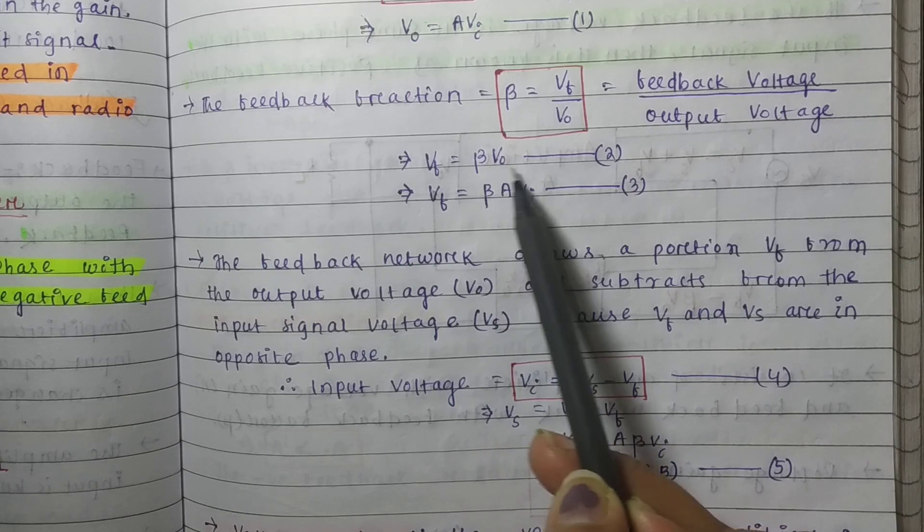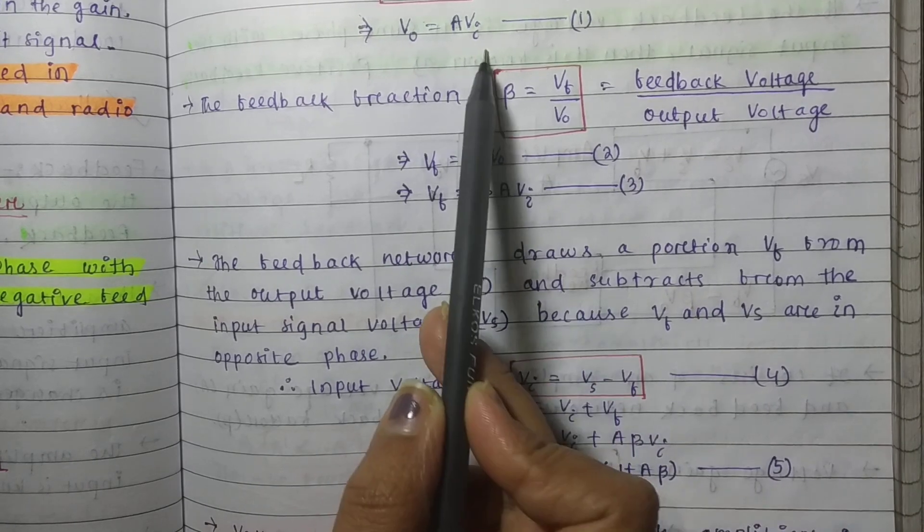Vf equals beta times Vo. Instead of Vo, we put A Vi.